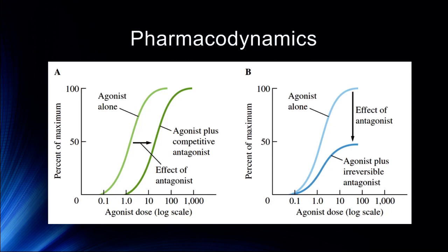When we talk about dose-response curves, an agonist dose has its effect; an agonist plus a competitive antagonist shifts that effect. We might have an irreversible antagonist that shoves the curve down so we're not getting any action at all. The effect of an irreversible antagonist is to reduce the maximum, whereas a competitive antagonist simply shifts the effect of the dose.